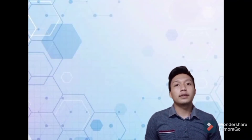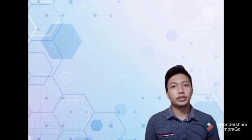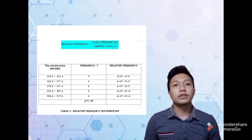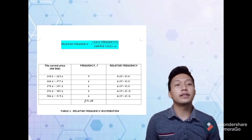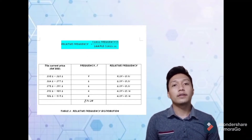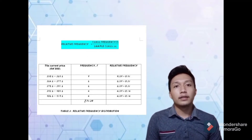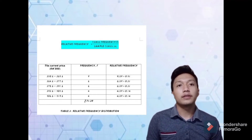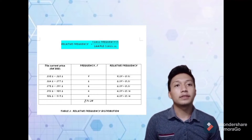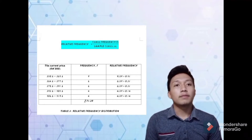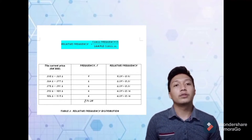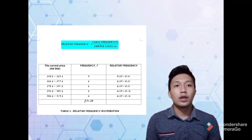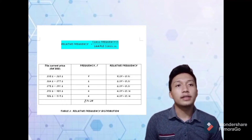Next, I will explain about relative frequency distribution. The relative frequency is the proportion or percentage of the data that falls in that class. To find the relative frequency of a class, divide the frequency by the sample size N. After totaling up the relative frequency, it should equal 1. If we don't get 1, it means our frequency is wrong.